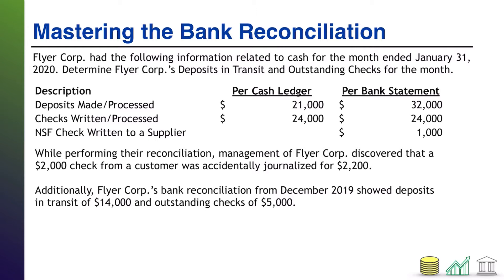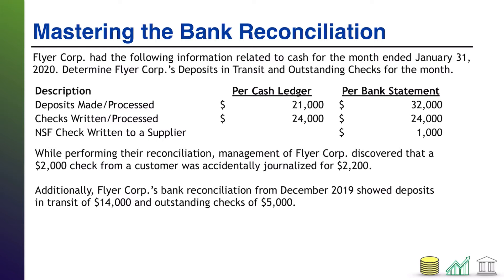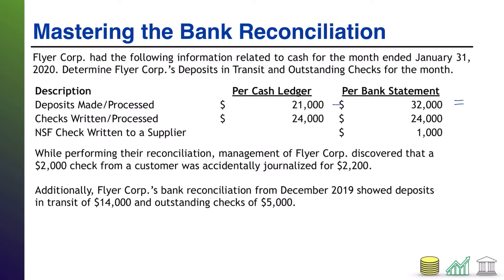Welcome back. First, let's get the goal in mind: we are calculating deposits in transit and outstanding checks for the current month. Deposits in transit are simply deposits the company has made but the bank hasn't processed yet. Typically, you take deposits per the company's cash ledger and subtract deposits per the bank — so 21,000 minus 32,000 gives a negative 11,000 deposits in transit. That should send up a red flag, because we should know more about our deposits than the bank does, so a negative number means something is off.